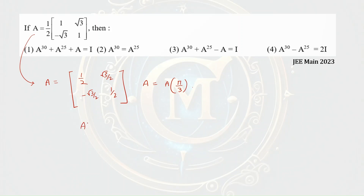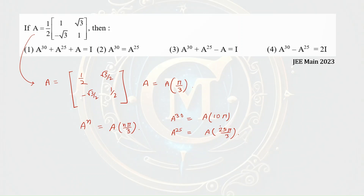That means if we have to calculate A to the power n, we can simply calculate it as A of n pi by 3. So A to the power 30 equals A of 10 pi. Cos of 10 pi is 1, and the off-diagonal entries are 0. So A to the power 30 is the identity matrix.